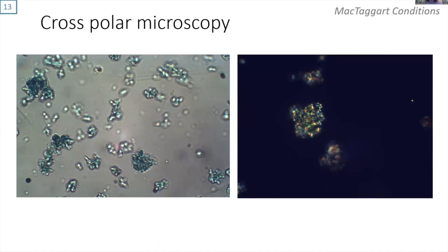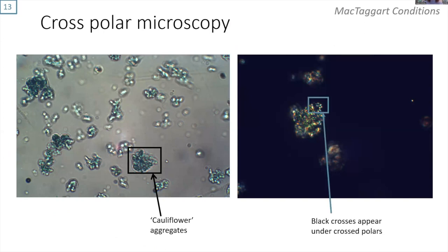We then compared to the McTaggart results using cross-polar microscopy. We saw cauliflower-like aggregates that they described, and we also saw black crosses appearing under cross-polars. As far as we can tell, we made the same products that they did.